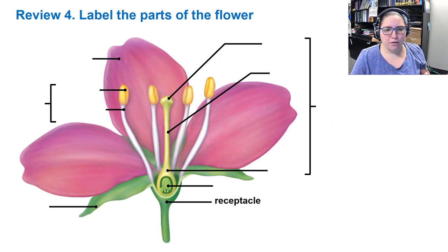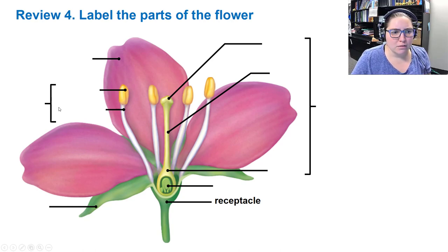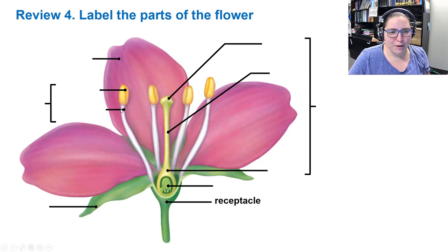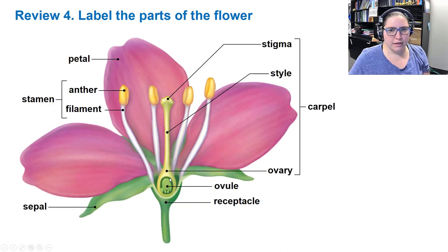Let's label the parts of this flower. The green part is the sepal. The male reproductive structures — the stamen — is made up of the anther and the filament. The pink part is the petal. All the female reproductive structures together are the carpel: stigma, style, ovary, and ovule. And there's a labeled picture of it for reference.